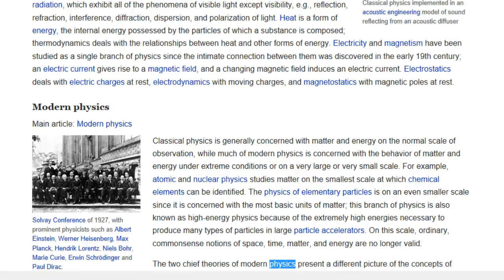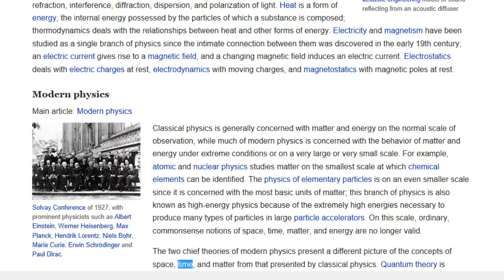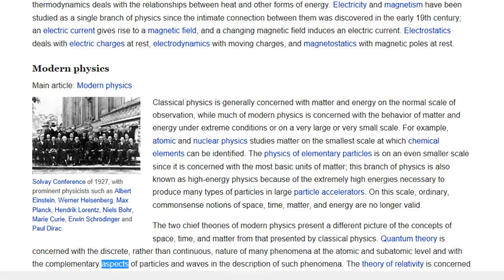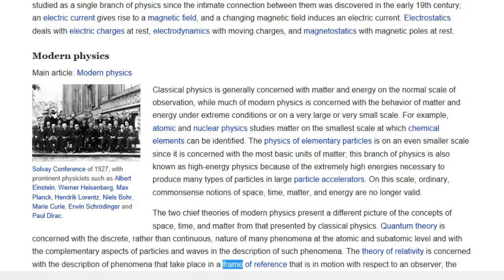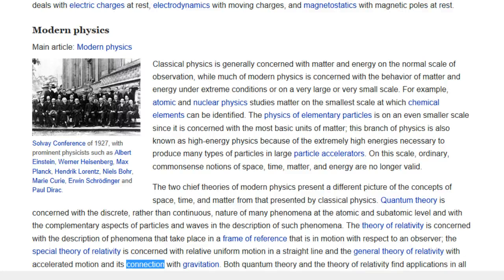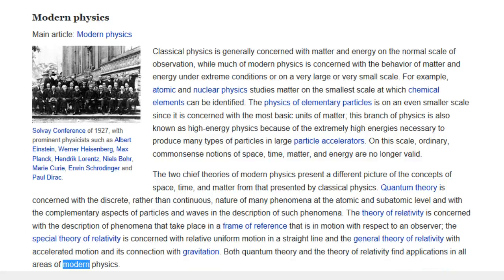The two chief theories of modern physics present a different picture of the concepts of space, time, and matter from that presented by classical physics. Quantum theory is concerned with the discrete, rather than continuous, nature of many phenomena at the atomic and subatomic level and with the complementary aspects of particles and waves in the description of such phenomena. The theory of relativity is concerned with the description of phenomena that take place in a frame of reference that is in motion with respect to an observer. The special theory of relativity is concerned with relative uniform motion in a straight line and the general theory of relativity with accelerated motion and its connection with gravitation. Both quantum theory and the theory of relativity find applications in all areas of modern physics.